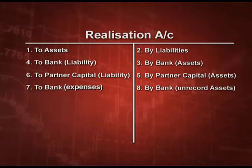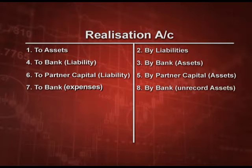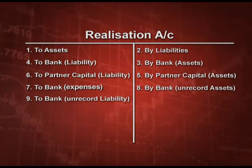If there is any unrecorded asset which is realized — unrecorded asset means it is not existing in the balance sheet, but still you are getting some money — so it is a complete gain for you. It comes on the credit side of the realization account, that is bank account debit to realization account. Similarly, if any unrecorded liability is paid, it is an expense, so you have to show it on the debit side — that is, realization account debit to bank account. And in the end, there can be profit or loss.